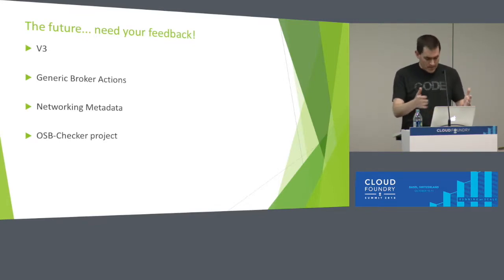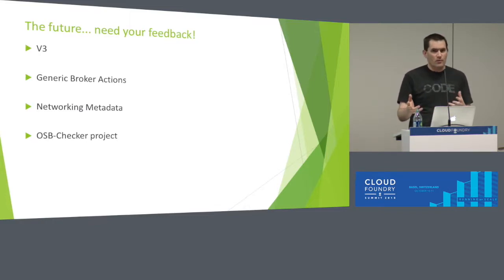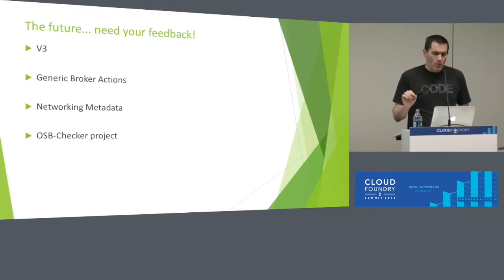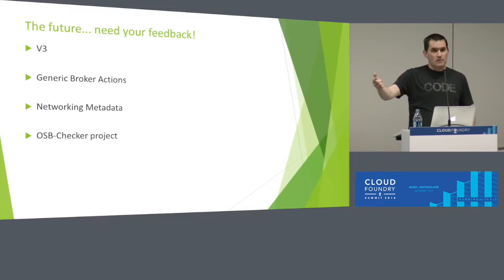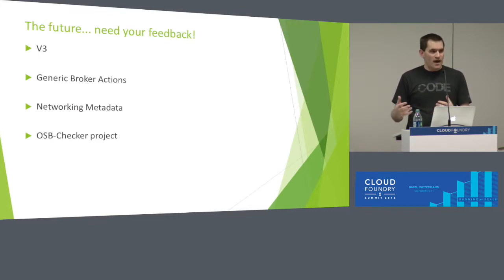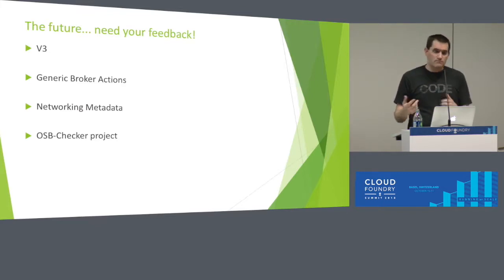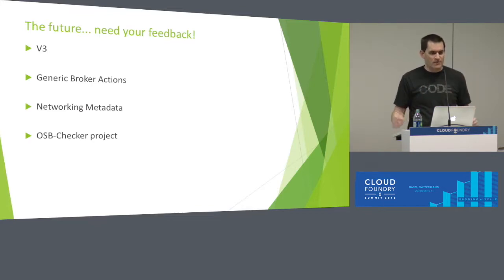Generic broker action is another future addition. People ask about operations beyond CRUD on instances and bindings — like backing up databases. We want to add that ability optionally. You could include a Swagger/OpenAPI doc as part of the catalog data so the broker can advertise to the platform what other operations it supports. The platform can then expose those to users. This allows people to extend the API in new ways without waiting for us as spec authors to put them in. If some extensions become really popular, maybe we'll add them to the spec.